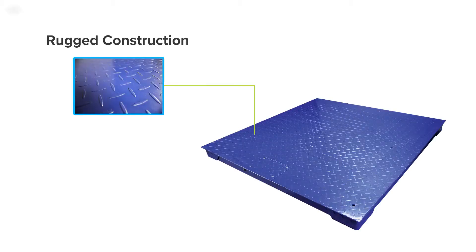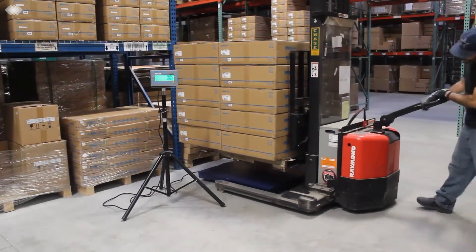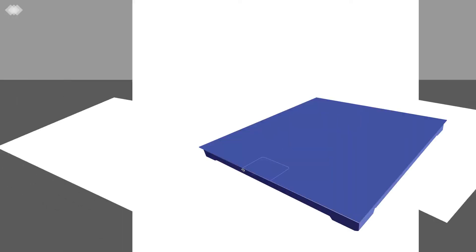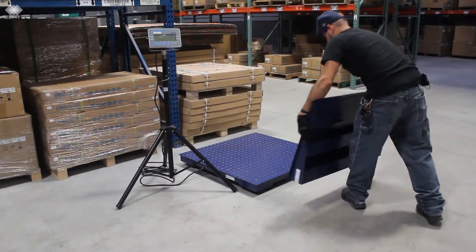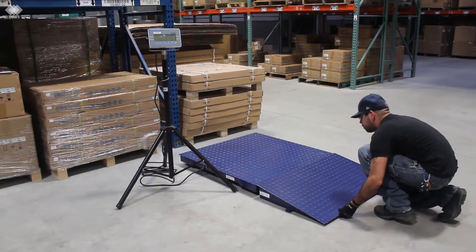Rugged construction and low-profile design simplify loading and unloading pallets, crates, and large containers. Perfectly sized for a pallet, the PT can be situated in a recessed pit. Optional ramps provide easy access and are tailor-made to fit the exact size of each platform.